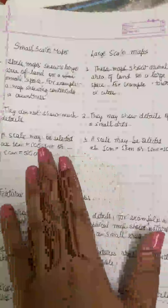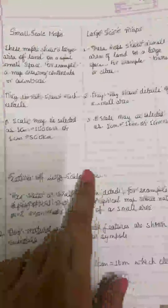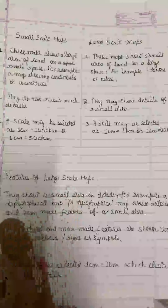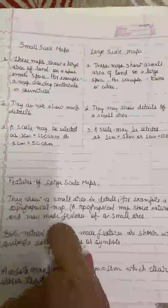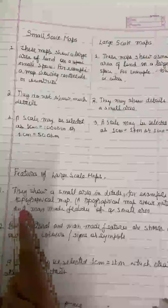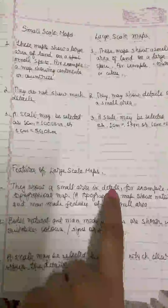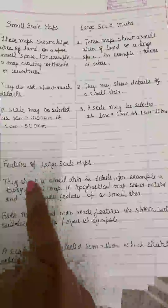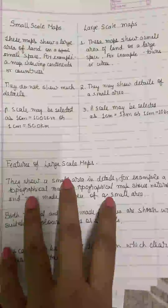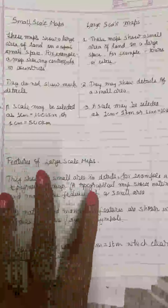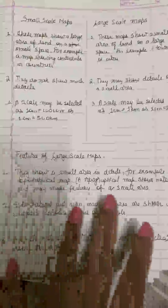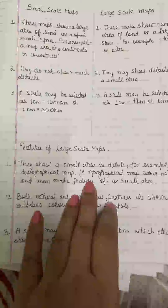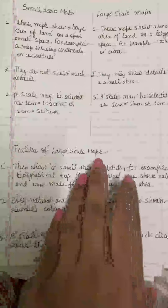This is a very important difference that can come as a two-mark question in your exam: differentiate between small scale map and large scale map. I will be sending this picture — please note it down in your geography copies. A large scale map shows a small area of land on a large space and shows it in detail. In your book it mentions a topographical map, which is a map that shows the natural and man-made features of a small area — for example, an area like Raza Bazaar, showing all natural things and man-made things like shops, clinics, and hospitals.